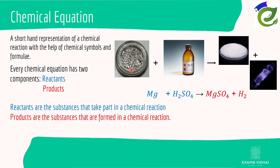This is basically how we are going to write it on paper. Magnesium plus sulfuric acid gives magnesium sulfate with hydrogen. Reactants are the substances that take part in a chemical reaction and products are the substances that are formed in the chemical reaction.